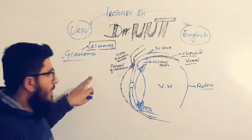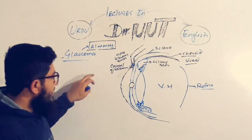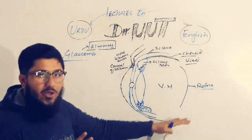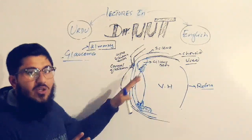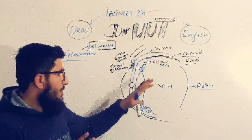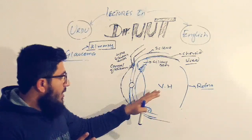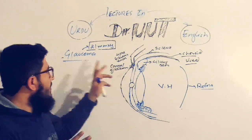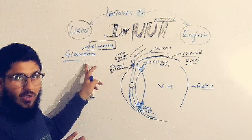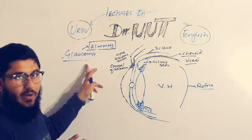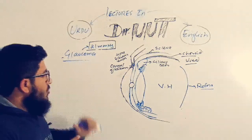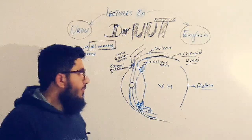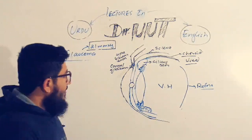Before going into the complex explanation of glaucoma or its types, a person must first know a little bit about the anatomy and physiology of the eye. Later we will move to the pharmacology of glaucoma — what drugs are used to treat it.